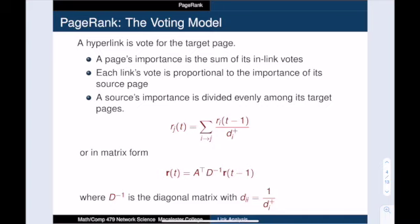Second, that importance is divided evenly among the out-neighbors. If a web page has ten out-neighbors, then each of those neighbors gets one-tenth of the page's importance. As you can see here, to get the new importance of a vertex J, we sum over all of the vertices I that link to J. And vertex I contributes its current importance divided by its out-degree.